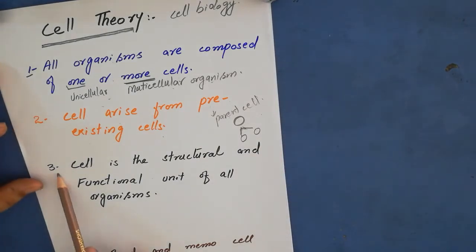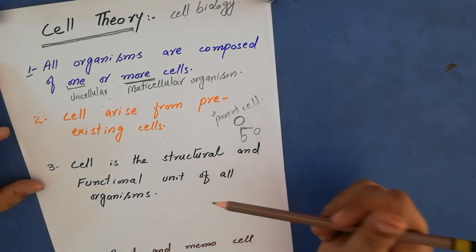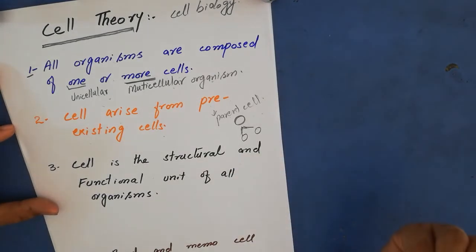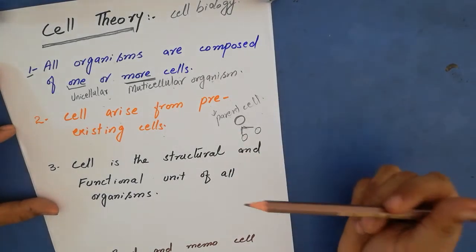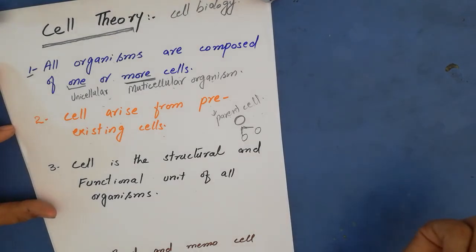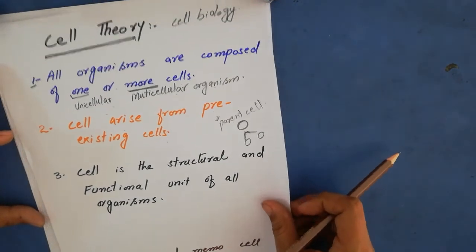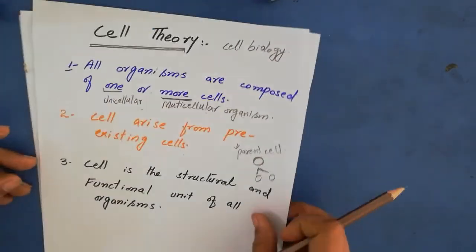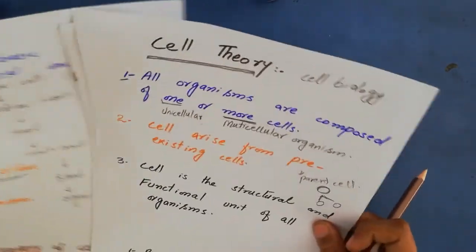Third postulate of cell theory: the cell is the structural and functional unit of all organisms. These are the three most important postulates of cell theory. That was our lecture for today — now let's revise what we learned.